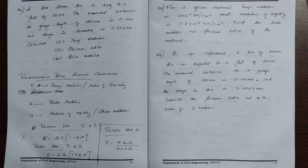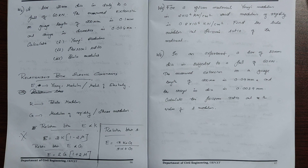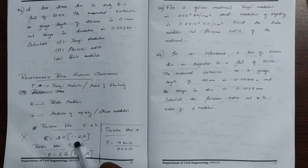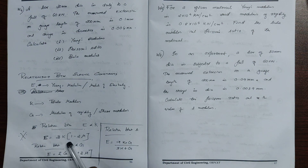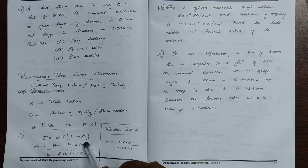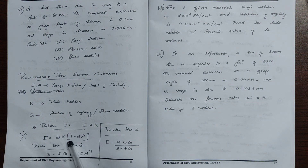The modulus of elasticity is Young's modulus E. The modulus of rigidity is the shear modulus, which is shear stress divided by shear strain. We also have the bulk modulus K. The relation between E and K is: E is equal to 3K into bracket 1 minus 2 mu, where mu is Poisson's ratio.